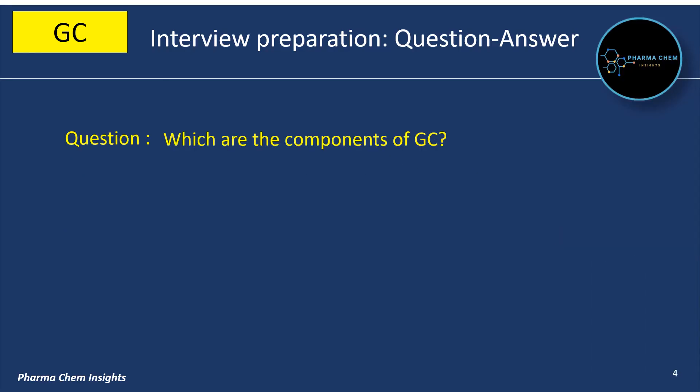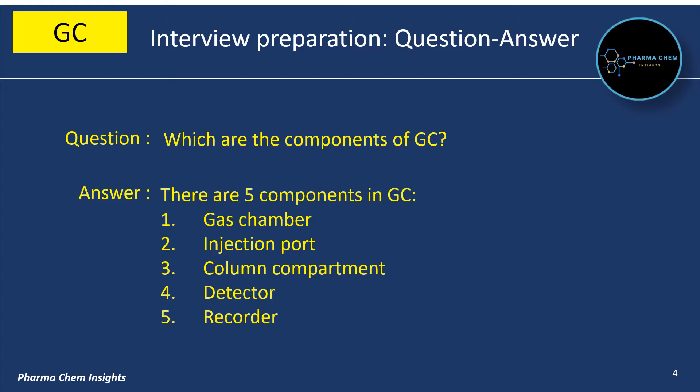Next question: What are the components of GC? There are 5 components in GC. First is gas chamber, second is injection port, third is column compartment, fourth is detector, and fifth is recorder.